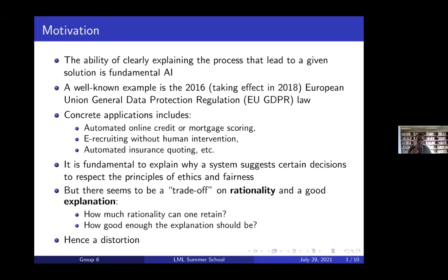There seems to be a trade-off between rationality and good explanation. For instance, companies want to maximize profit, but what maximizes profit doesn't always lead to good explanation. Essentially, we keep asking how much rationality can one retain if they want to maximize profit, and how good an explanation should be. Between those two, there's a bit of distortion. This project is in two parts: one where we focus on the distortion, and one where we focus on the rationalization of the explanation.